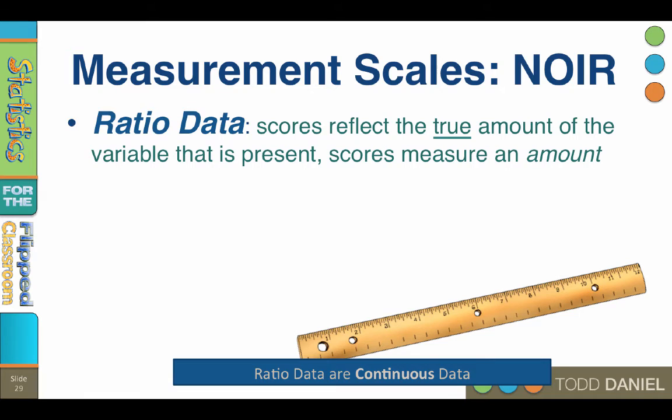Interval data are quantitative in nature and are continuous data. Ratio data occur when the scores reflect the true amount of the variable that is present. Scores are said to be ratio if they are measuring an amount. The intervals in the ratio data are consistent.